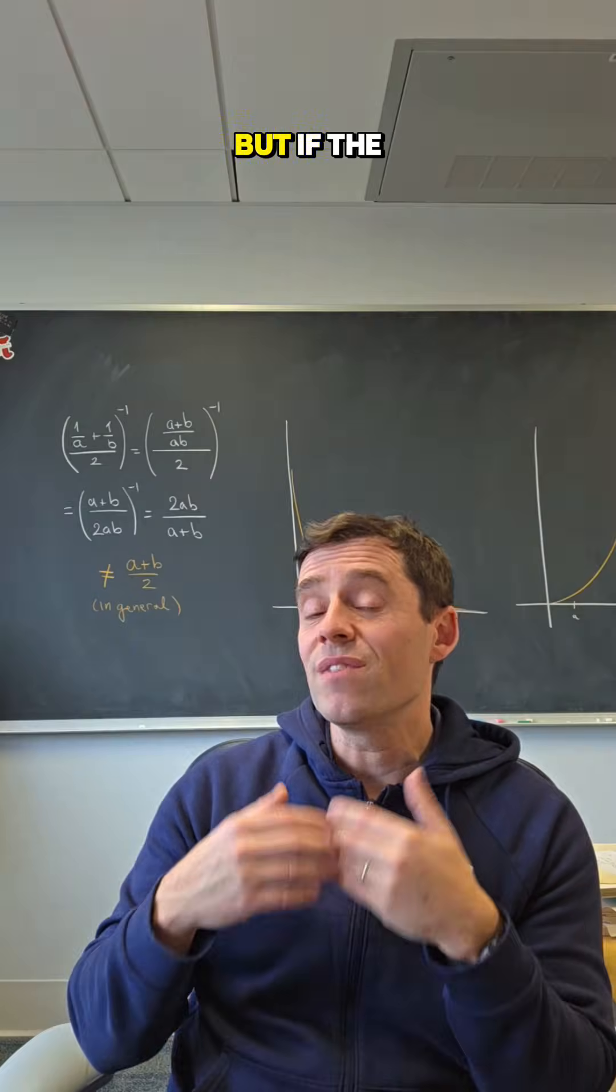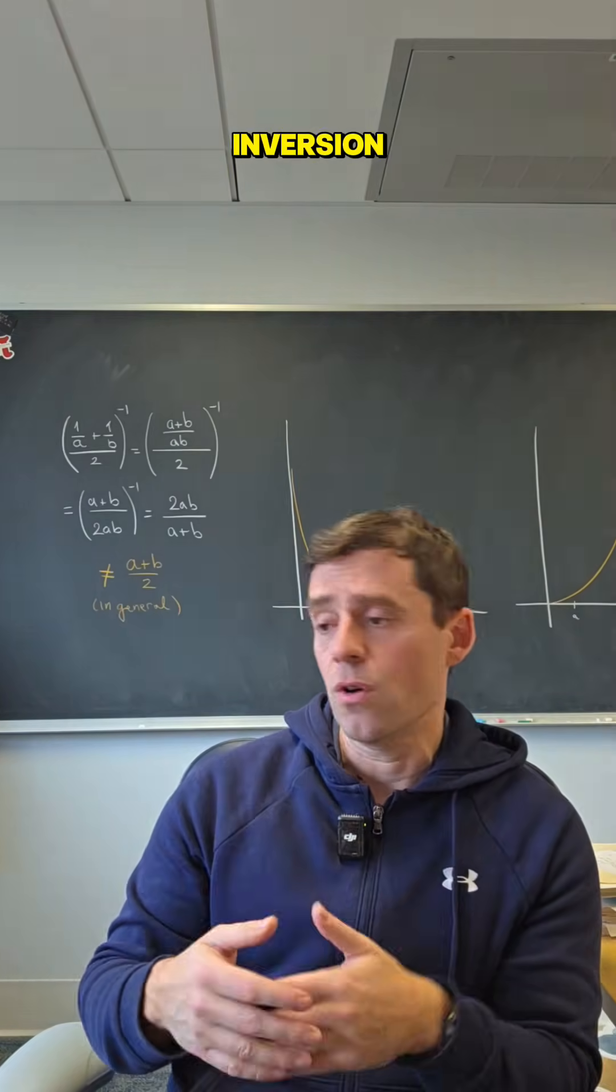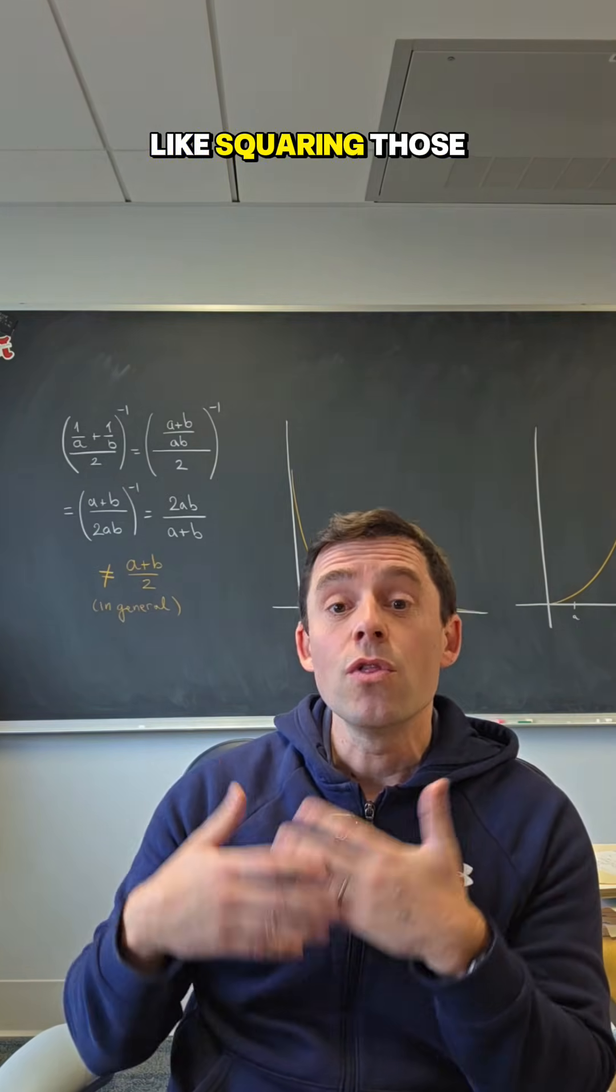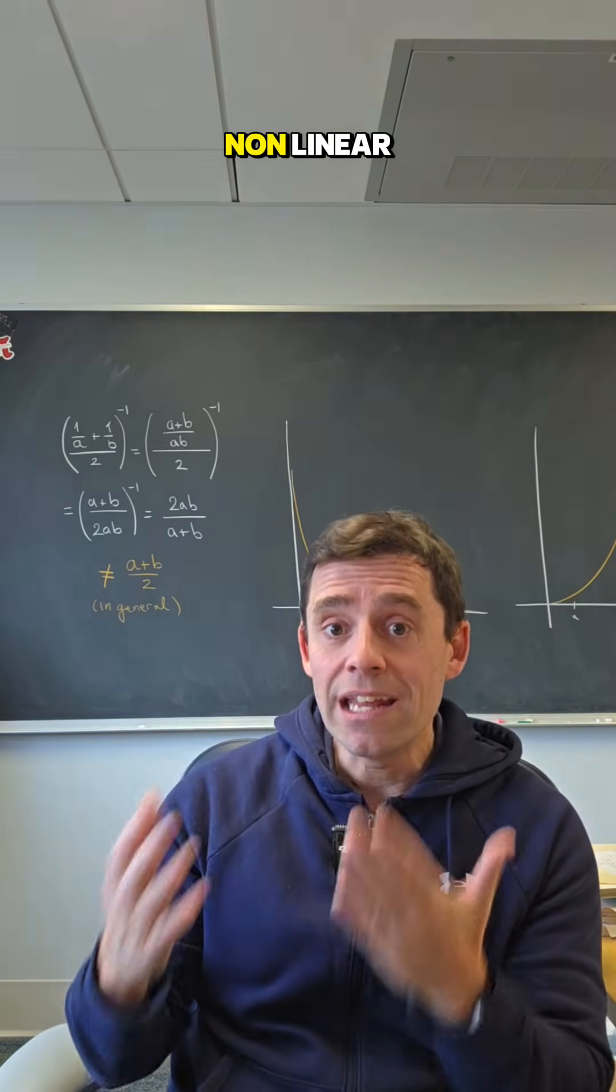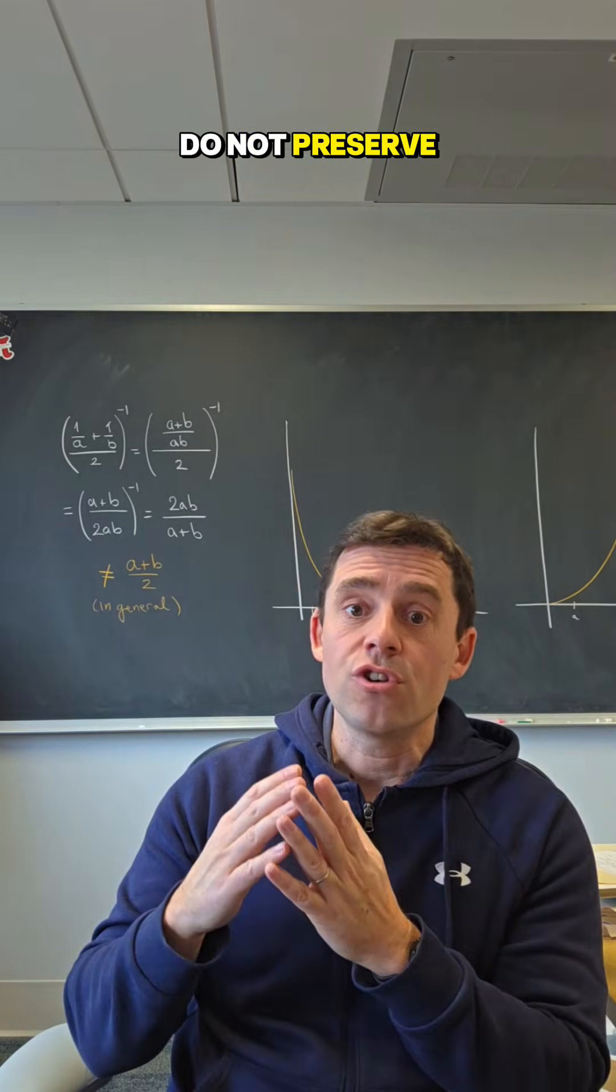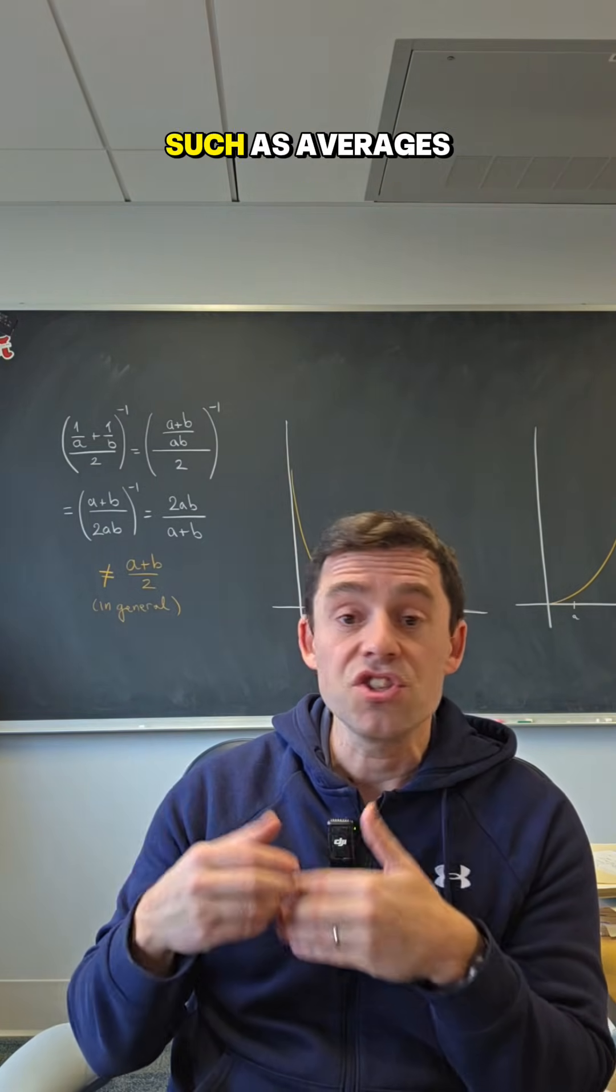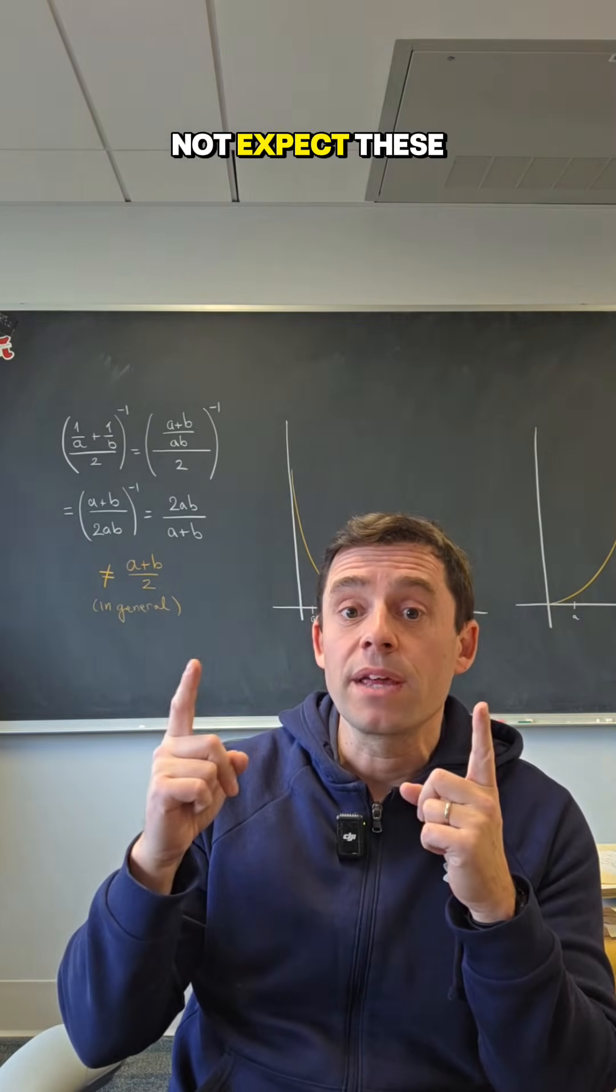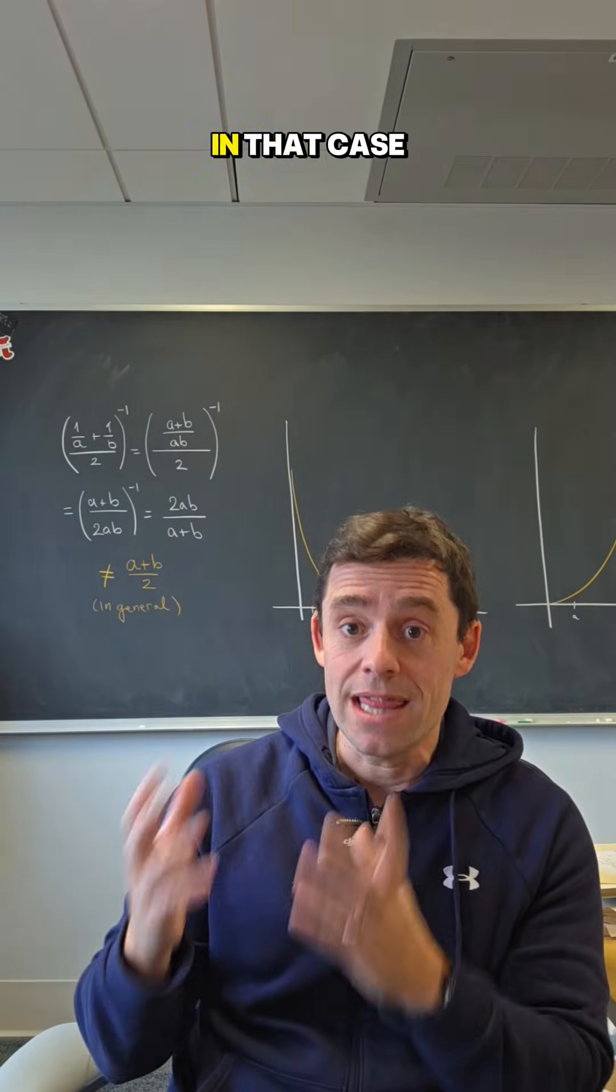But if the function that we're using, for example here, inversion, or we're using a function that is quadratic, like squaring, those functions that are non-linear do not preserve these linear properties such as averages, and therefore, we do not expect these averages to coincide in that case.